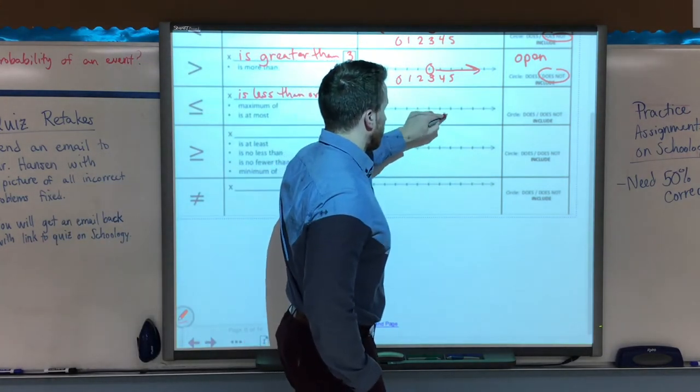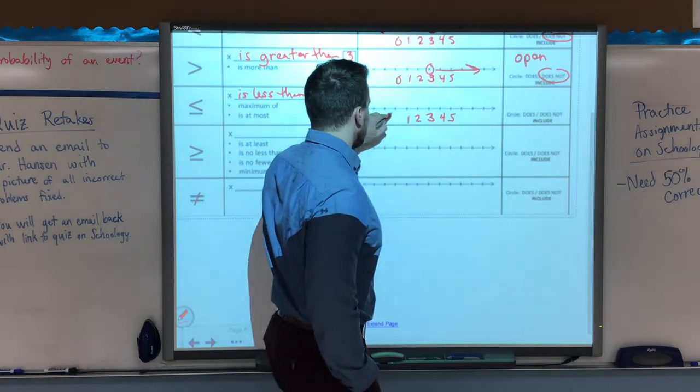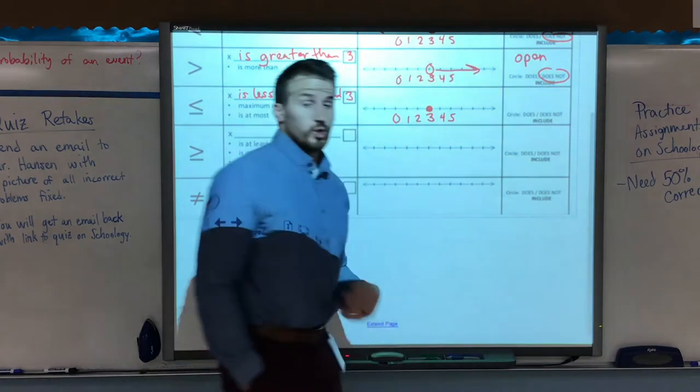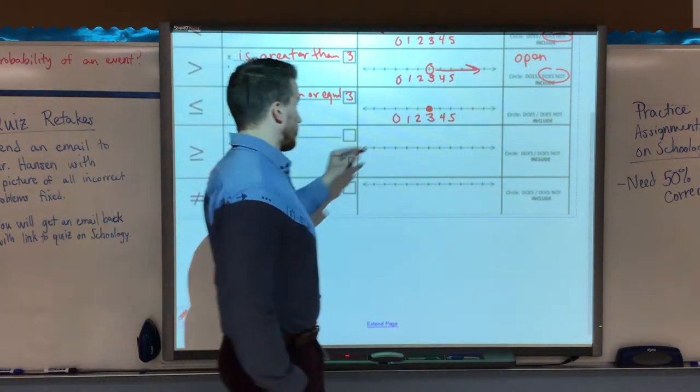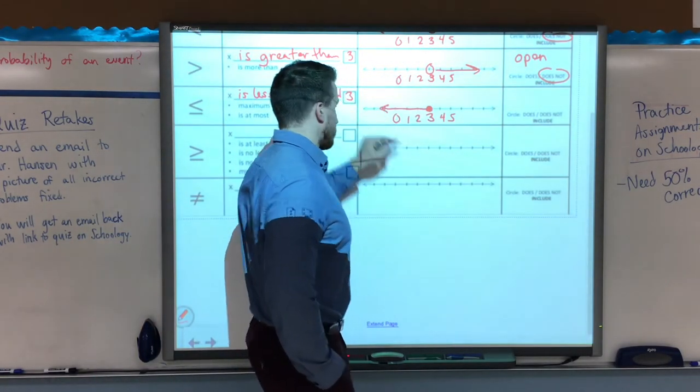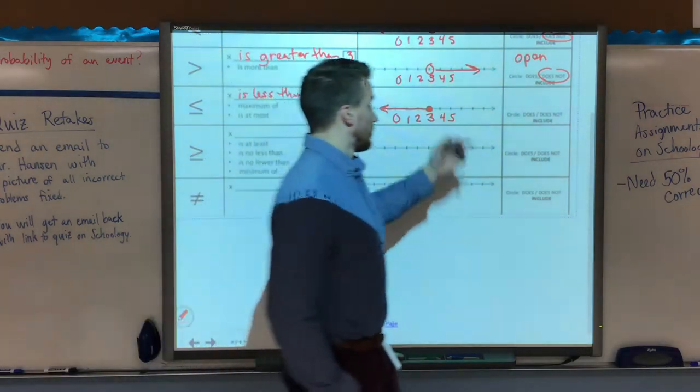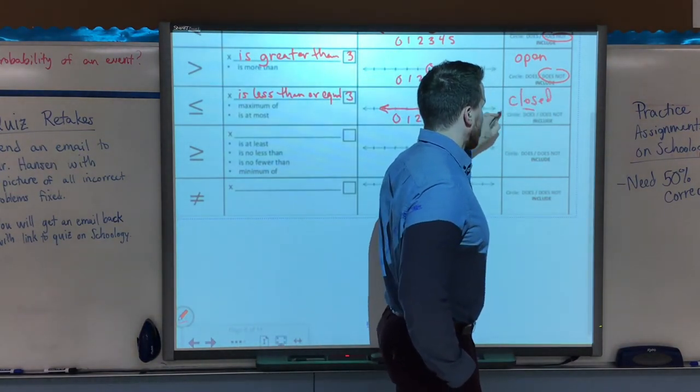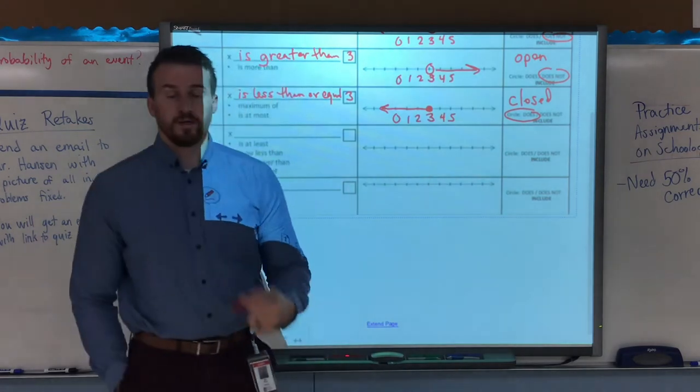So here's 3, 4, 5, 2, 1, 0, etc. I'm going to close that circle because it could be 3 or anything less than that. So again, the arrows to the left because those are numbers less. And now this time it's closed, and it does include the value of 3.